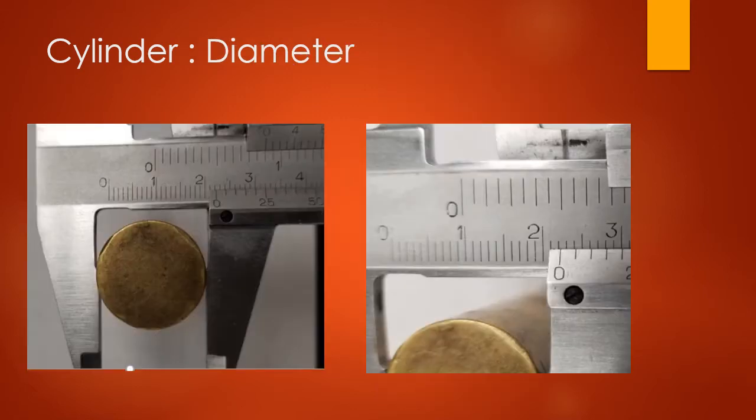Next, let's look at the diameter. The diameter is the widest part of the circle of the cylinder. I'm placing that inside the calipers. Remember we're reading from where the zero dash is, so it should be 2.2 something — a little past that 2.2 mark. Make sure you're going out two decimal places and recording the units in centimeters.